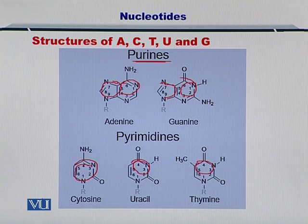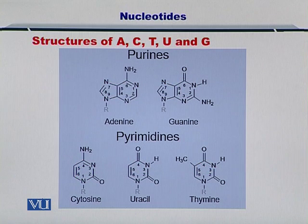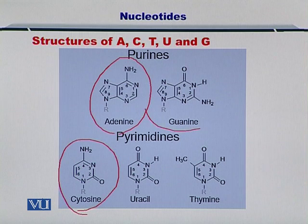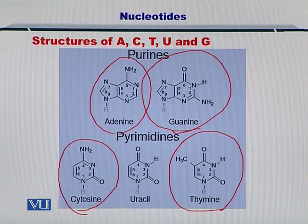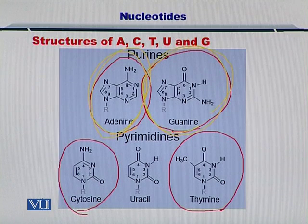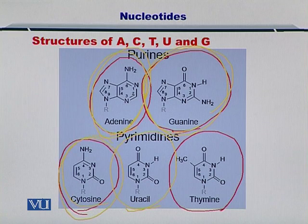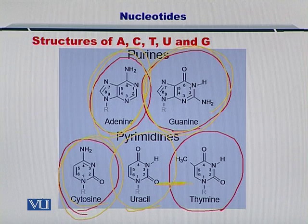You have adenine and guanine, which are termed as the purines due to their structure. Then you have cytosine, uracil and thymine, which are the pyrimidines. The difference here is in the structure — the purines have two rings while the pyrimidines have a single one. In case of the DNA you only have cytosine, adenine, guanine and thymine, while in case of RNA you have adenine, guanine, uracil and cytosine. In this way the RNA and DNA differ between uracil and thymine.